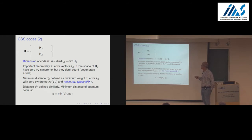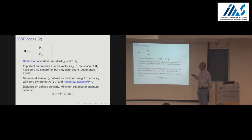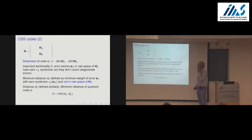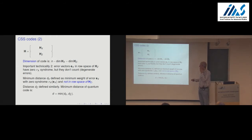The second important technicality: error vectors in the row space of one of the two matrices, say H_Z, will naturally — because they're orthogonal to the row space of H_X — belong to the classical code defined by H_X, so they have zero syndrome. They're themselves non-zero, but they actually don't count. If these errors occur, they don't bother us; the technical reason is that they don't modify the quantum state we're trying to protect.